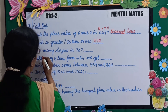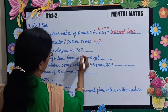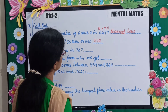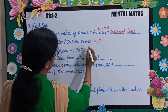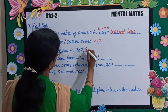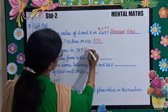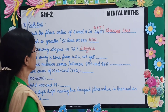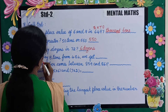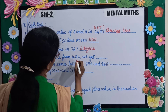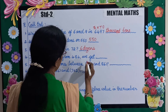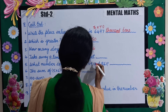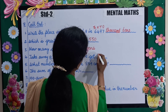How many dozens in 72? One dozen equals 12. 12 sixes are 72, so there are 6 dozens. Take away 8 tens from 484. 8 tens means 80, so the answer is 404. What number comes between 859 and 861? The answer is 860.